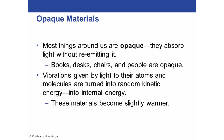We talked about transparent materials, but most things around us are opaque — they absorb light without re-emitting it. Things like books, desks, chairs, and ourselves are opaque. Vibrations given by light to their atoms and molecules are turned into random kinetic energy or internal energy. When you stand out in the sun or in front of a light, you feel warmth because your electrons start vibrating within your body, and instead of the light passing through, it's transformed into heat.